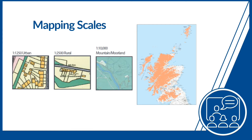Traditionally, the Ordnance Survey produced maps at three scales. 1:1250, which is the left-hand image, was used in cities and large urban areas. It is the most detailed scale the Ordnance Survey produces maps at. This scale shows most features as they appear on the ground, including intricate details of buildings such as bay windows and conservatories. 1:2500 scale is used in more rural areas, including rural towns and villages. The map will not show certain details that appear on the ground due to the scale of the map. The Ordnance Survey will stylise certain features — for example, where in the 1:1250 map the Ordnance Survey will show a bay window, at 1:2500 scale they will not.